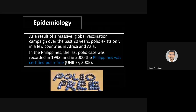As a result of massive global vaccination campaigns over the last 20 years, polio exists only in a few countries in Africa and Asia. In the Philippines, the last polio case was recorded in 1993, and in 2000 the Philippines was certified polio-free by UNICEF. Similarly, in 2014 India was declared a polio-free nation by UNICEF, with no single new case since then.